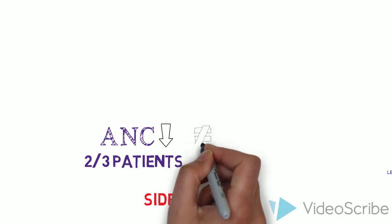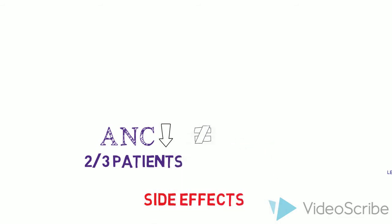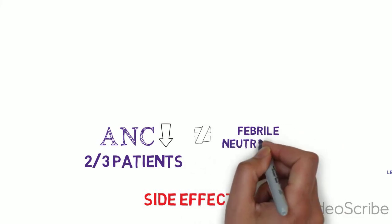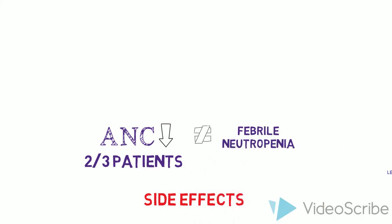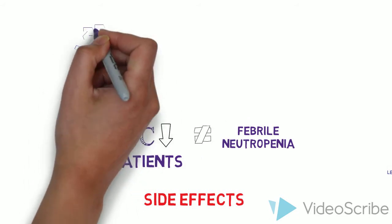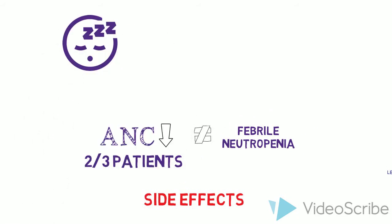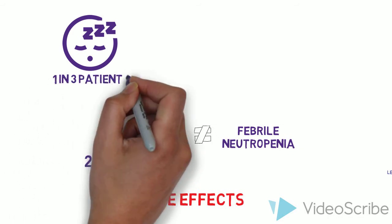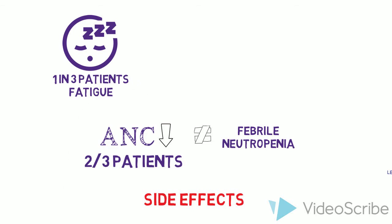Interestingly, this seems to rarely result in febrile neutropenia, although there is a slight increase in rates of infection. Other common side effects included fatigue, with around a third of patients experiencing fatigue on the palbocyclib and ribocyclib arms and about 10 percentage points less experiencing fatigue on the placebo and letrozole arms.